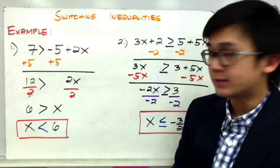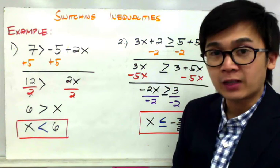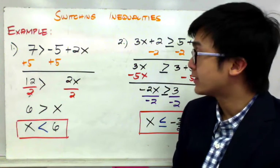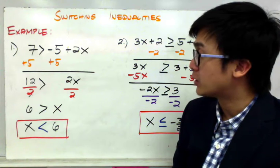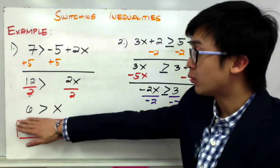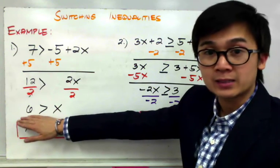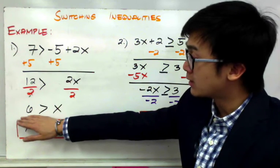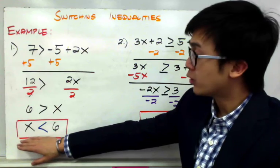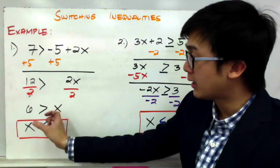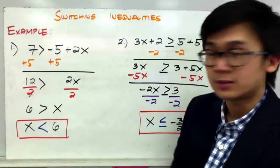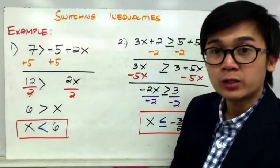The basic rule in writing an inequality is that your variable should always be on the left side and your numerical value on the right side. So if I have 7 greater than negative 5 plus 2x and need to solve for x, I add 5 on both sides, giving me 12 greater than 2x. Dividing both sides by 2 leaves me with 6 greater than x. Since x is on the right side, I need to switch it — so the final answer is x less than 6.